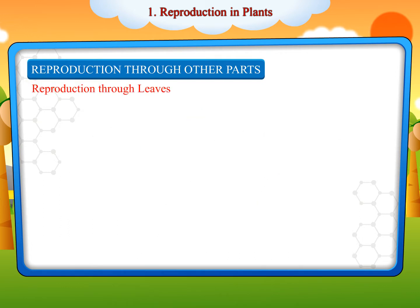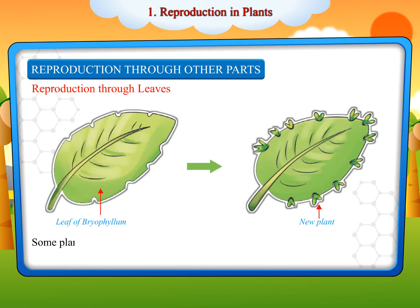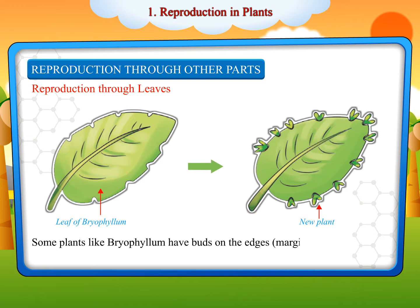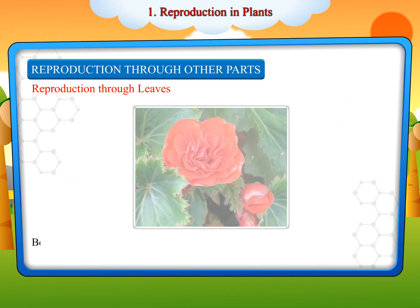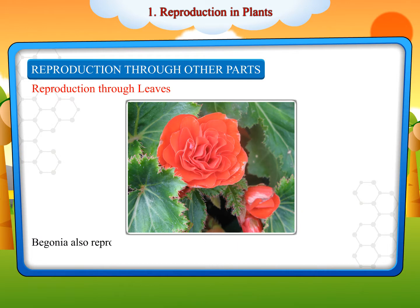Reproduction through leaves: Some plants like bryophyllum have buds on the edges or margins of their leaves. On keeping such leaves in moist soil, these buds grow into new plants. Begonia also reproduces through its leaves.